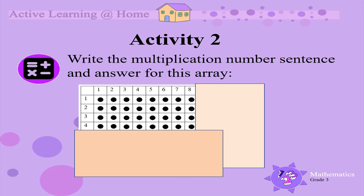Activity 2: Let's write the multiplication number sentence and answer for this array. The array shows 4 groups of 8, so the multiplication number sentence is 4 times 8. Now count the dots and you will get the answer, 32.